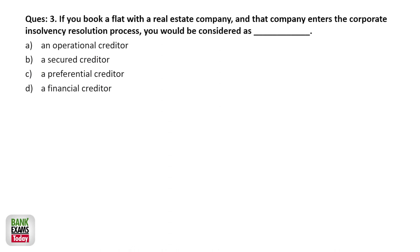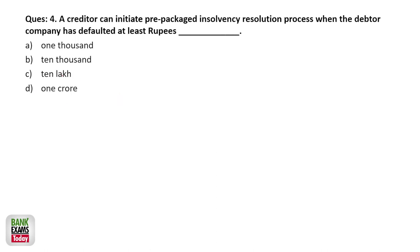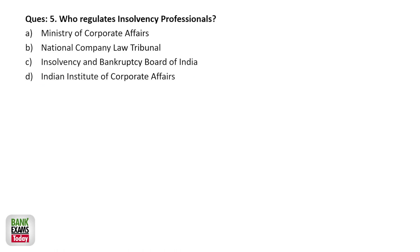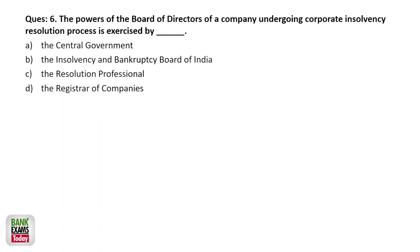If you book a flat with a real estate company and the company enters a corporate insolvency resolution process, you would be considered a financial creditor. A creditor can initiate pre-packaged insolvency resolution process when the debtor company has defaulted at least 10 lakhs — minimum 10 lakhs, maximum one crore. Who regulates the insolvency professionals in India? It's the Insolvency and Bankruptcy Board of India — they are the regulatory body.